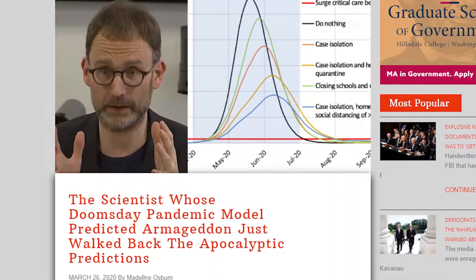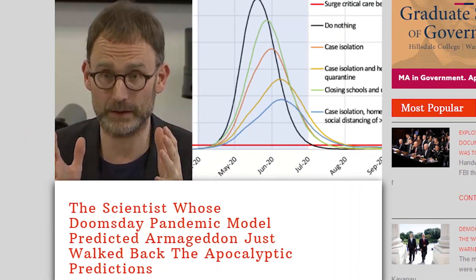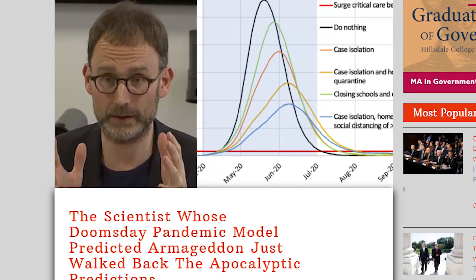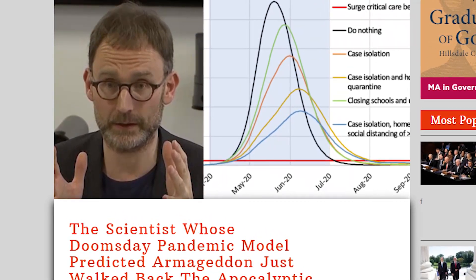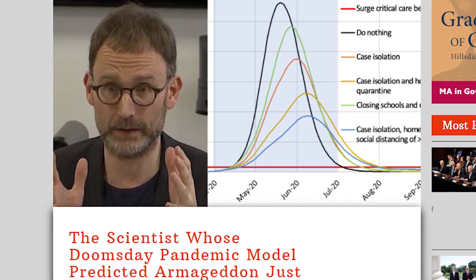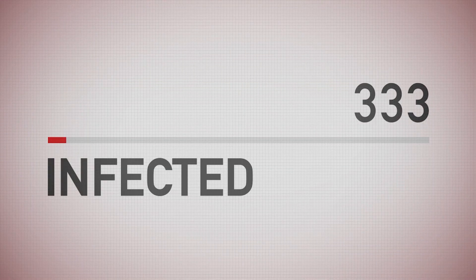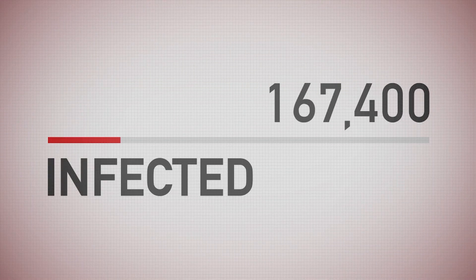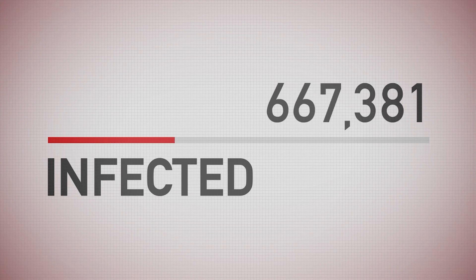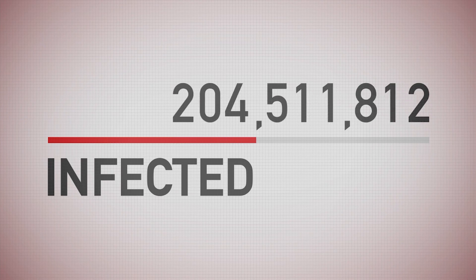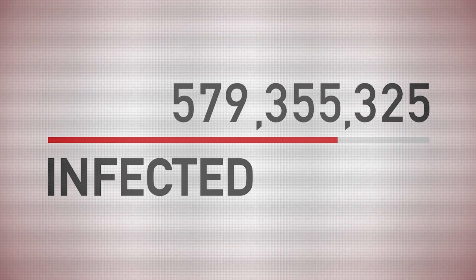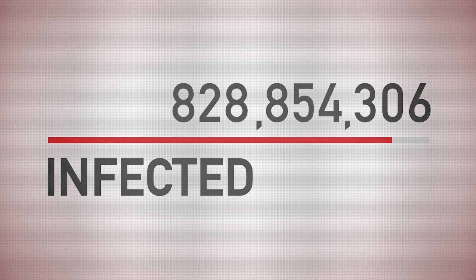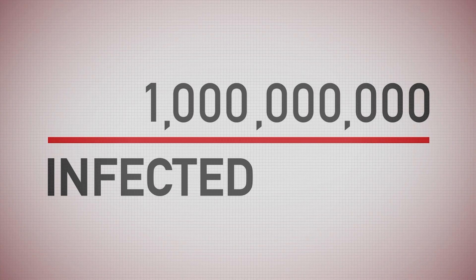One headline even stated, quote, the scientist whose doomsday pandemic model predicted Armageddon just walked back the apocalyptic predictions, says the Federalist. The original model actually lays out a range of predictions, from tens of thousands to 500,000 dead, all depending on how people react. Epidemics are especially sensitive to initial inputs and timing, because epidemics grow exponentially.